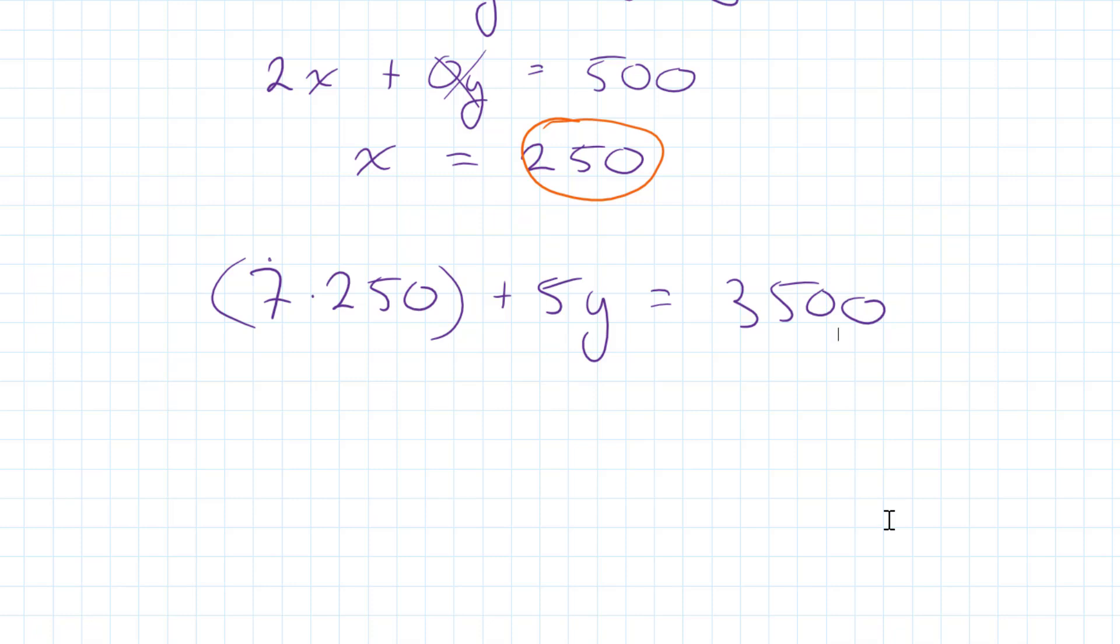7 times 250, that's going to be 1,750 plus 5y is equal to 3,500. If I subtract the 1,750 from the 3,500, we get 5y is equal to 1,750.